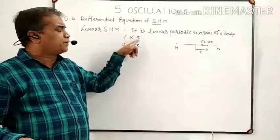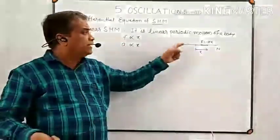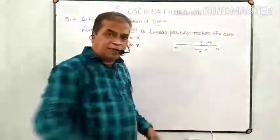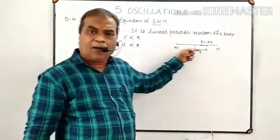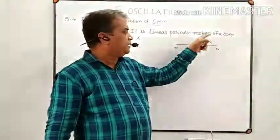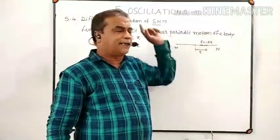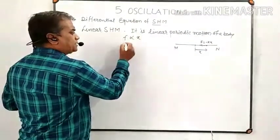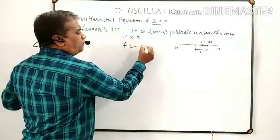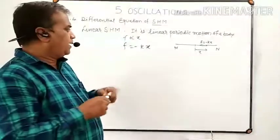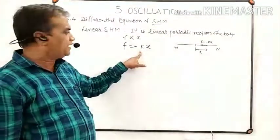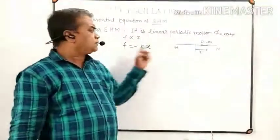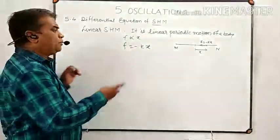This means force and displacement are oppositely directed. Hence we can say that when F is proportional to x, it means F is equal to minus k times x, where k is the constant of proportionality known as the force constant. The negative sign indicates that force and displacement are oppositely directed.